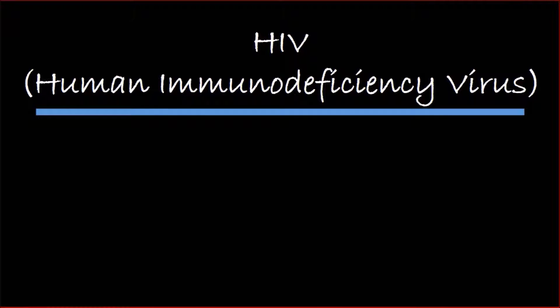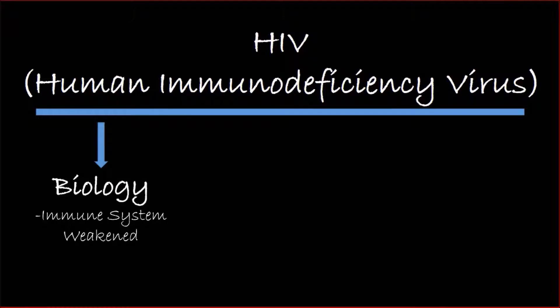I wanted to spend a little bit of time talking about an aspect of HIV and AIDS that we don't typically talk about too much, and it's rather a complex topic. When you learn about HIV and AIDS in the classroom setting, you typically learn about the biology of HIV — how the human immunodeficiency virus attacks helper T cells and ultimately impairs the immune system's ability to fight off other infections. In fact, a person can develop AIDS where the immune system is so weakened that an individual is at an extremely high risk of death from just basic infections.